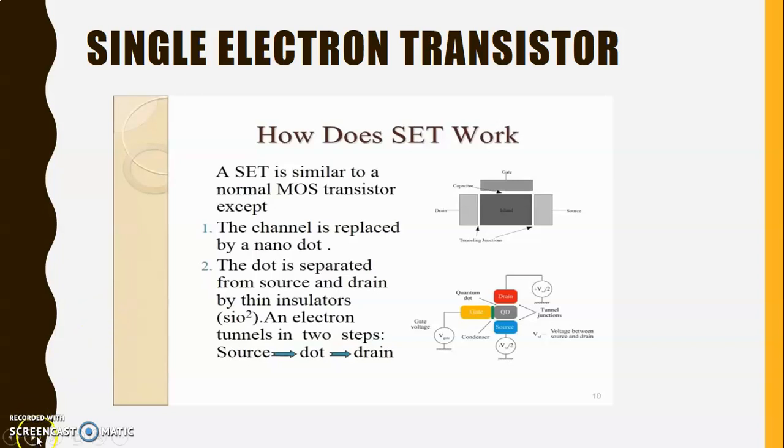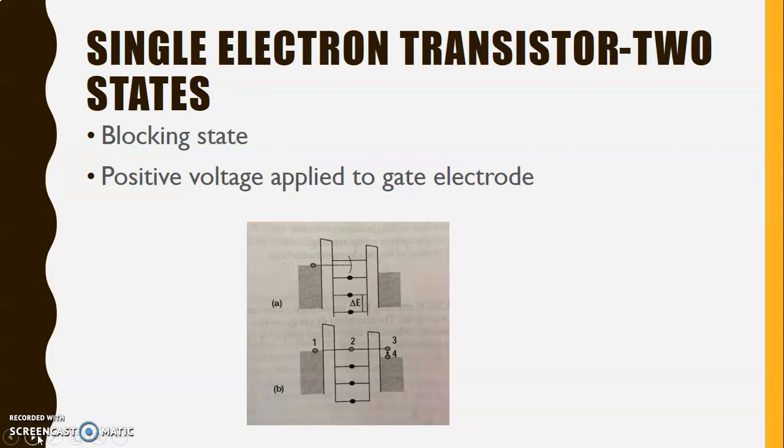Single electron transistor has got mainly two states of operation: one is effectively the blocking state and the other one is the state in which a positive voltage is applied to a gate electrode. What happens in the blocking state? No accessible energy levels within the tunneling range of electron on the source contact.